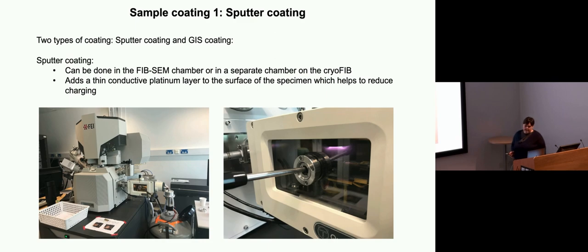Before you get to do any milling, it's quite important to do some sample coating to prepare the grids for milling. There are two types of coating we do, sputter coating and gist coating. The sputter coating, depends on instruments, can be inside the chamber but quite often is external.